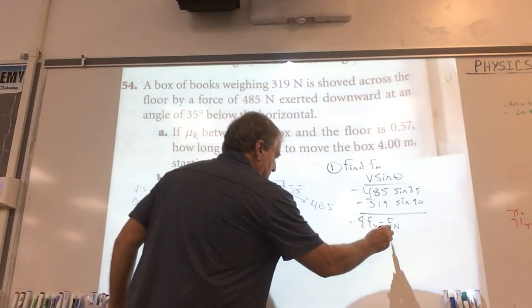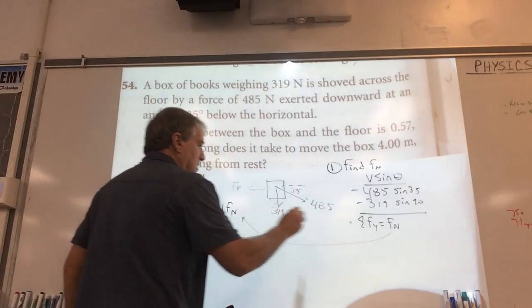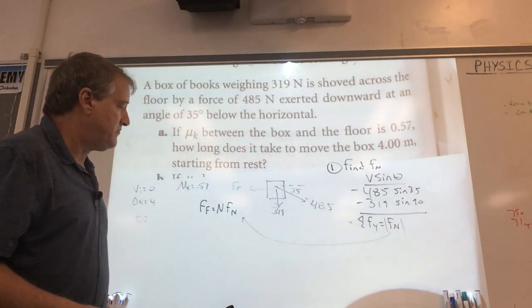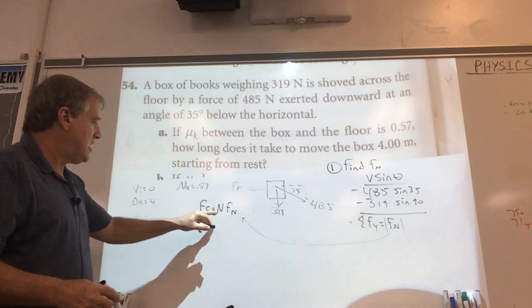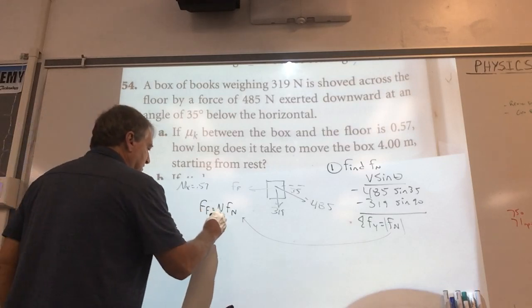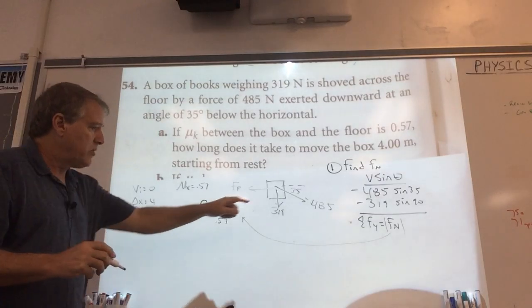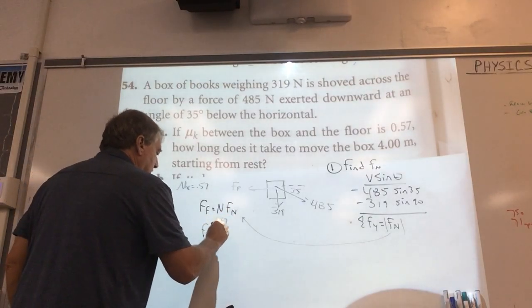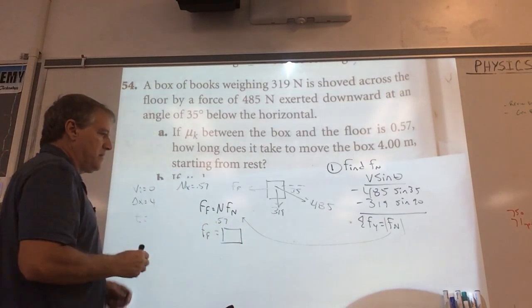And all we're going to do is we're going to take that. So what we can do is maybe make this an absolute value. So you don't forget you've got to make it a positive. We're going to plug it into this equation. Now, we already know the mu sub k is 0.57. So we're going to multiply that by 0.57. That's going to give us my force of friction here.